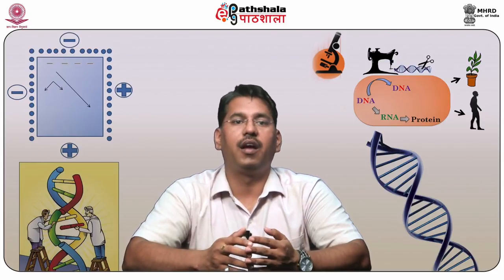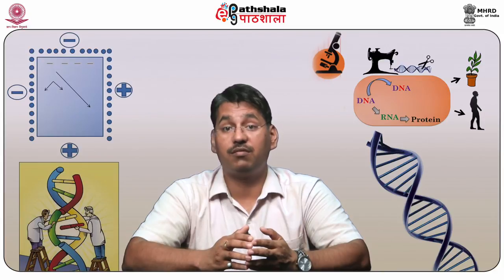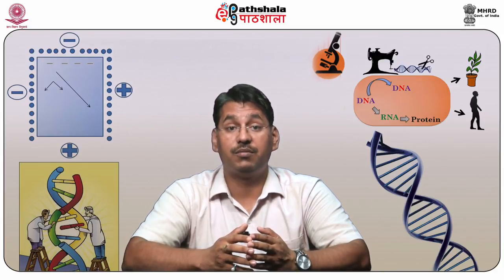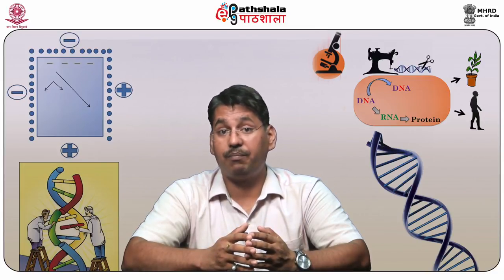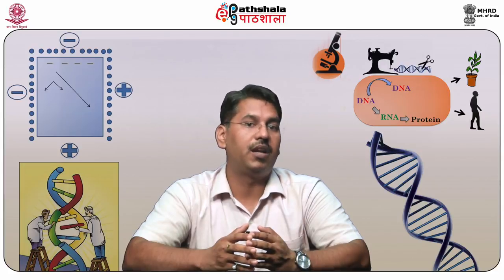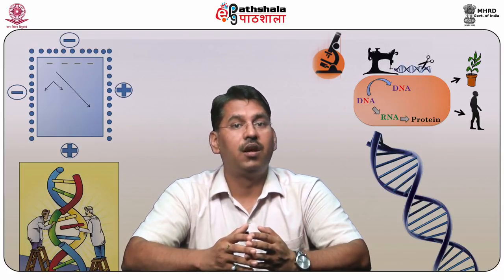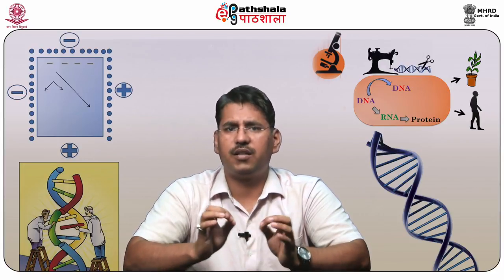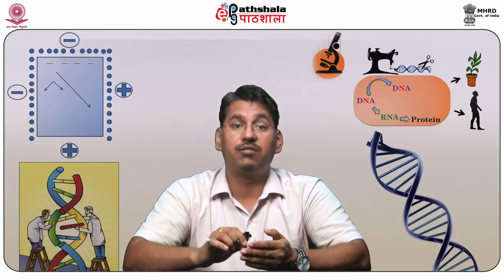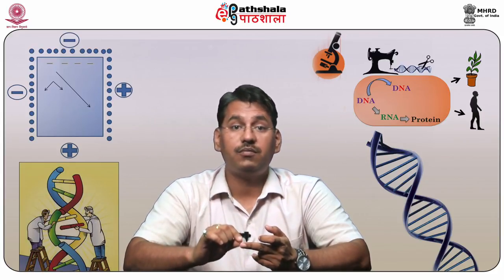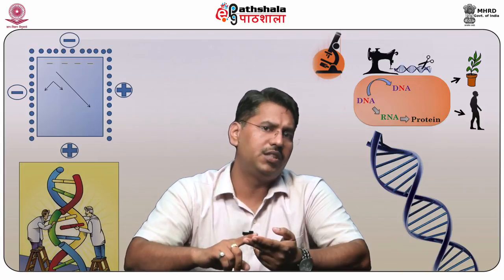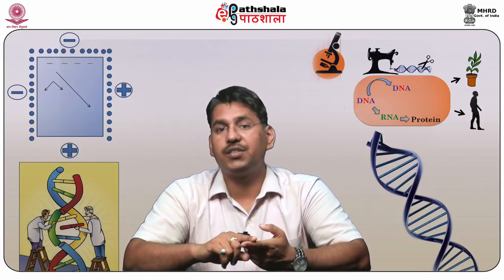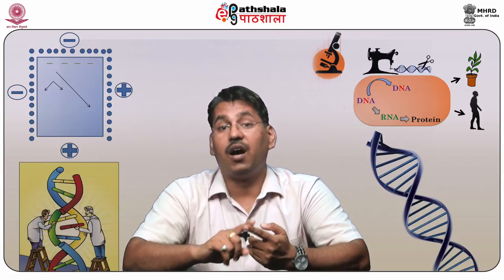Bacteriophage M13 was first isolated from wastewater from the city of Munich by Hofschneider in 1963 in Germany. M13 is a unique bacteriophage having a single-stranded DNA packaged into a two-layered filamentous capsid, made up of only three proteins. M13 has a small single-stranded circular genome of 6407 nucleotides, first sequenced by Sanger in 1982.